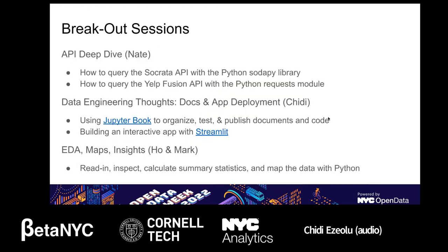We have a few breakout rooms where we'll dive deeper into the different phases of the data science process. One of the first things you do when working with a problem is thinking about what datasets will help you answer your questions. Nate will be diving into getting data using the Yelp API, and you'll also practice using the Socrata API, both utilizing Python. From there, you'll have an opportunity to look at how we document our project. We used GitHub and the Jupyter Book library to organize all our notebooks and scripts, which helped organize, test, and publish our documentation.